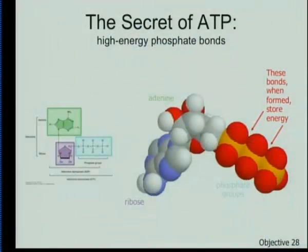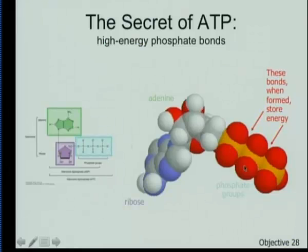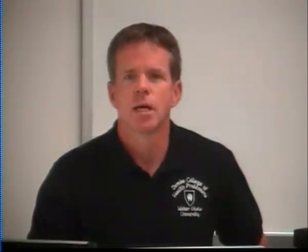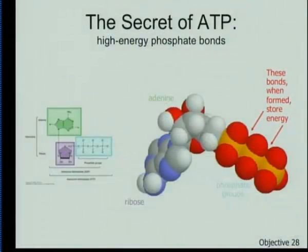The big player — alongside glucose — is ATP. We store energy in the high-energy bonds between phosphate molecules. When I add a phosphate, I store energy. When I release that phosphate, I release energy. People often say ATP is energy — but no, ATP is not energy. It's a molecule that stores energy for us that we can then release. It has power, which is why we refer to it as the energy currency of our body.